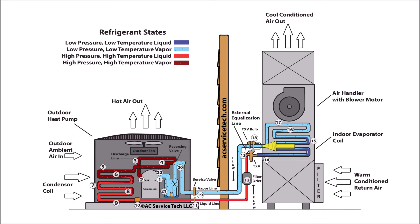The low pressure, low temperature, superheated vapor travels to the vapor service valve at step nineteen. This is where you can read the low pressure, low temperature vapor pressure, and also where you can check the total superheat of the system. The temperature increase of the vapor refrigerant between step sixteen and step nineteen is referred to as the total superheat.